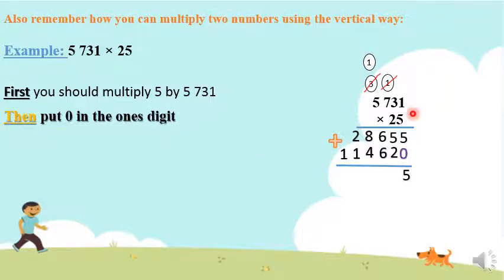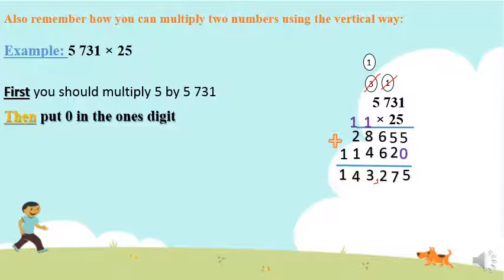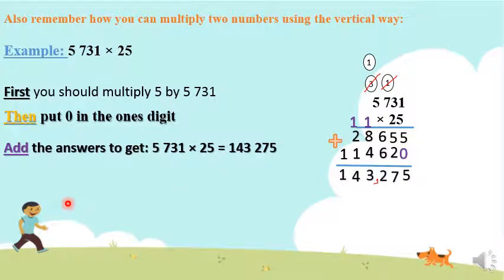Then we add the results starting from right to left. 5 plus 0 is 5. 2 plus 5 is 7. 6 plus 6 is 12, carry 1. 8 plus 4 is 12, plus 3 is 13, carry 1. 2 plus 1 plus 1 is 4, and here you get 4. So our final answer is 143,275. Don't forget to put a comma after three digits from the right. This is the product of 5,731 and 25.